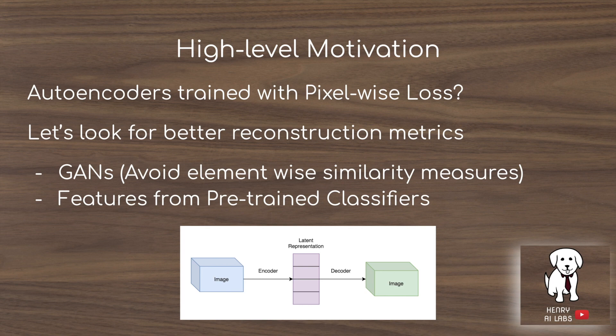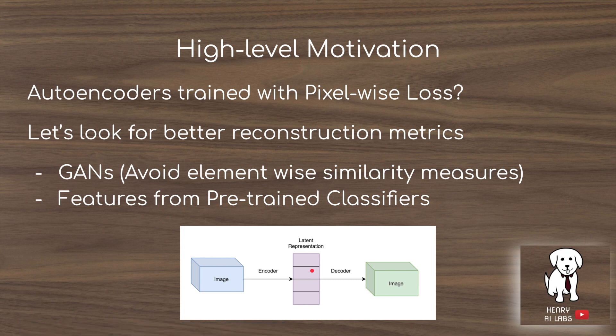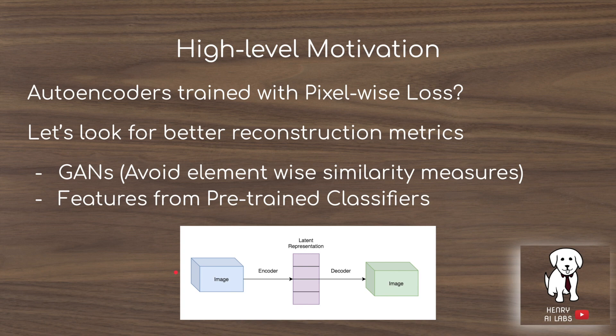The high-level motivation is that autoencoders take in an input image and encode it with neural networks into a low-dimensional vector representation. They then have a different neural network called the decoder that takes the vector representation and tries to reconstruct it into the original image. The way an autoencoder is trained is based on the pixel-wise distance between the reconstructed image and the original image. The idea behind the VAE-GAN is to get towards a more semantic loss function than pixel-wise distance metrics.